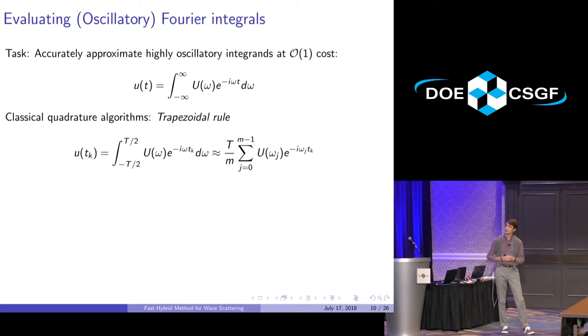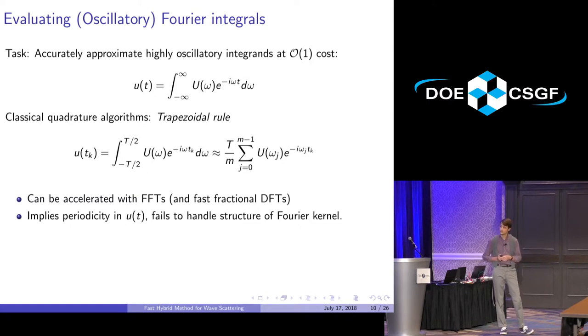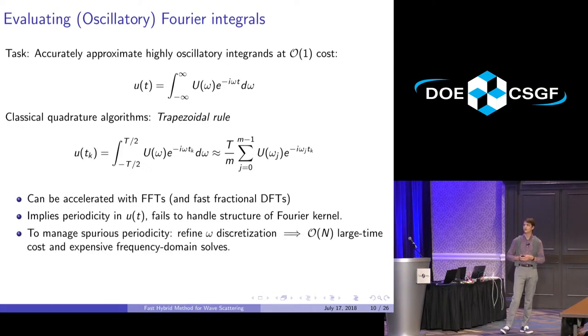I'm going to describe a new quadrature rule that we developed for this problem, but first I want to explain why the trapezoidal rule is not what you want to do. This is the trapezoidal rule—a classical method to produce the solution to any periodic integrand, but also for band-limited functions. If you do this for the Fourier transform, you get this discretization. Unfortunately, you have this exponential in the result, and this is periodic. Since it's periodic, it's going to be a problem, and you have to handle that. You have to more finely discretize in omega, which is the frequency domain, and that's obviously expensive. This is not a good solution for long-time simulation.